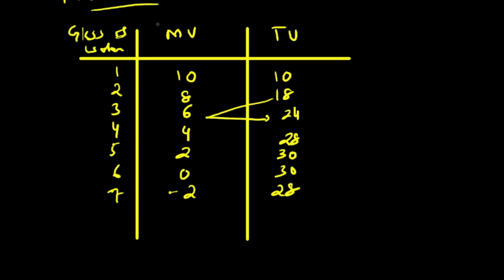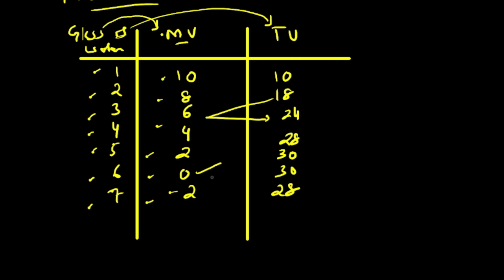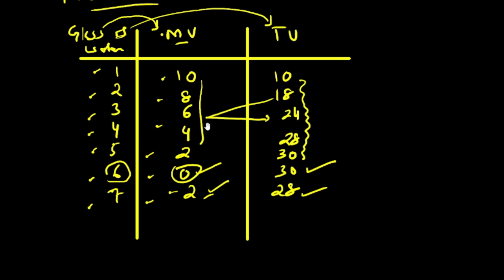Now draw two graphs: one showing quantity consumed versus marginal utility, and another showing quantity consumed versus total utility. As quantity consumed continuously increases, marginal utility continuously falls. One important relationship: when marginal utility is positive, total utility is continuously rising; when marginal utility is zero, total utility is at its maximum; when marginal utility is negative, total utility starts falling.